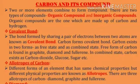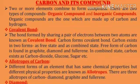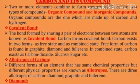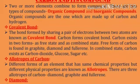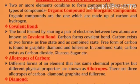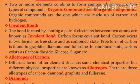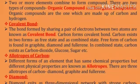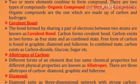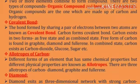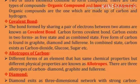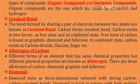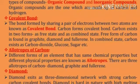As we know, two or more elements combine to form a compound. There are two types of compounds: organic compounds and inorganic compounds. Organic compounds are the ones which are made up of carbon and hydrogen.